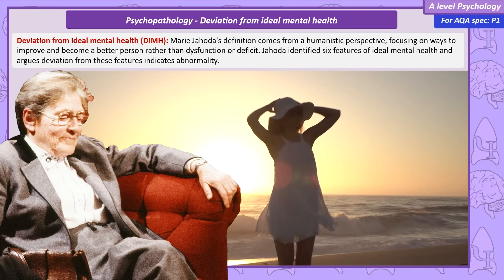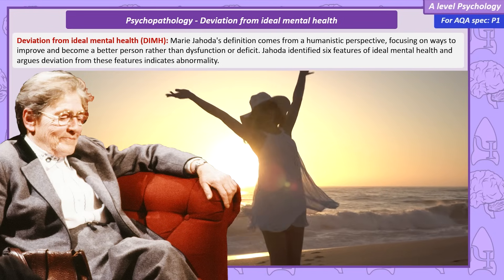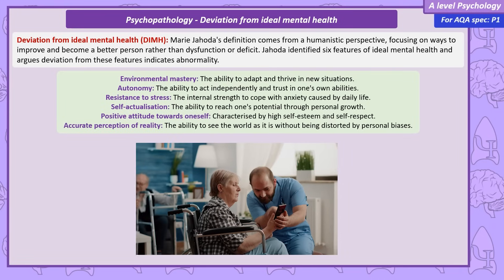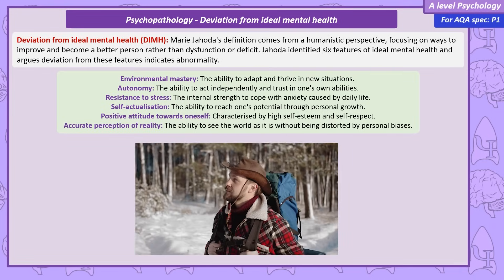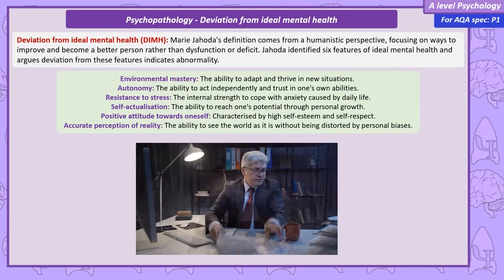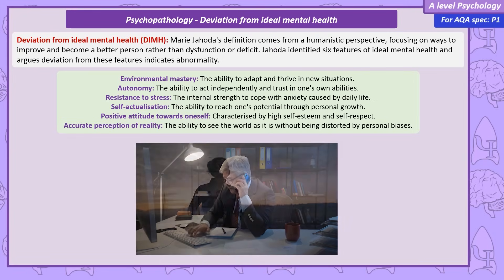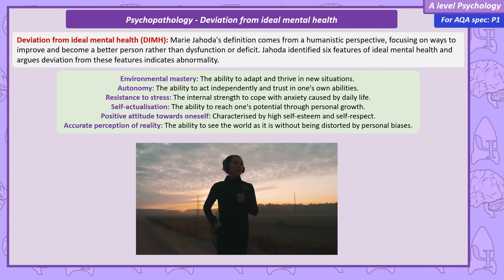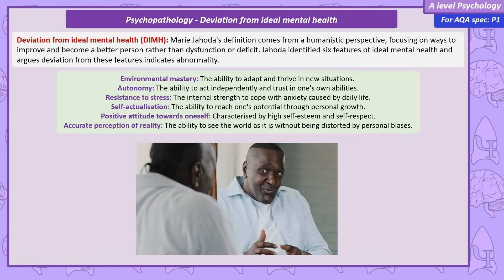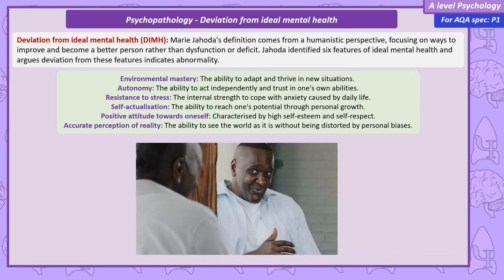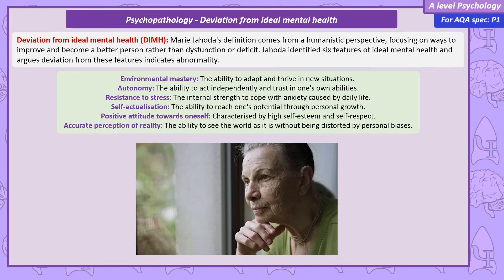Jahoda identifies six features of ideal mental health, and deviation from these features may indicate abnormality. Environmental mastery refers to the ability to adapt and thrive in new situations. Autonomy is the ability to act independently and trust in one's abilities. Resistance to stress refers to the internal strength to cope with the anxiety caused by daily life. Self-actualization is the ability to reach one's potential through personal growth. A positive attitude towards oneself is characterized by high self-esteem and self-respect. Accurate perception of reality is the ability to see the world as it truly is, without being distorted by personal biases.